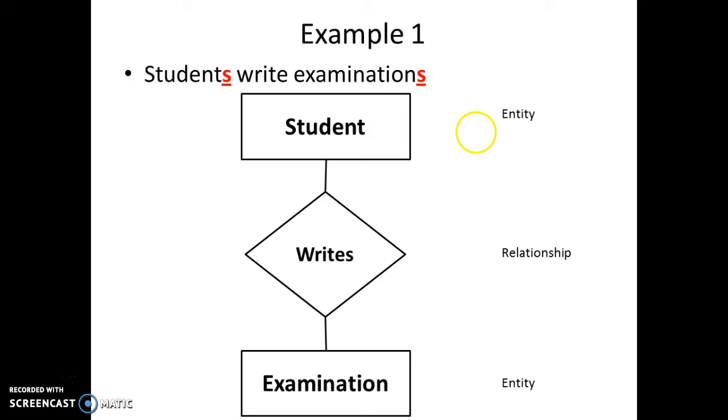If the statement is modified like this, students write examination, the diagram will not change but yes, a dimension to it will be added in the form of this here. This represents cardinality, this star represents cardinality. It shows how many students are writing how many examinations. We can say many students write many examinations. So, star represents many. That is many to many cardinality.